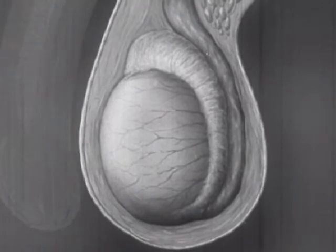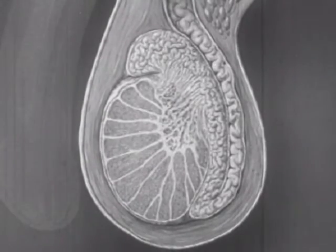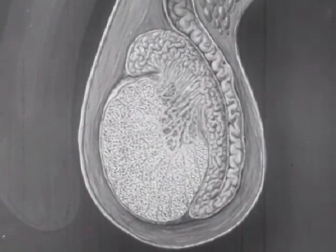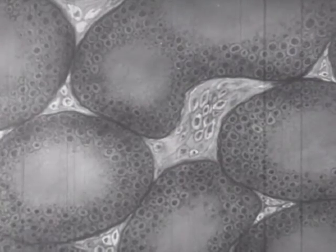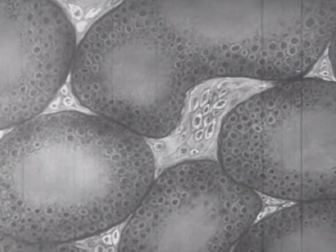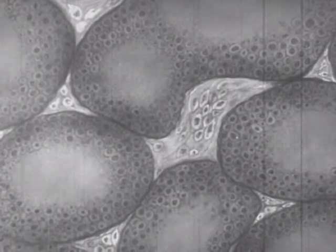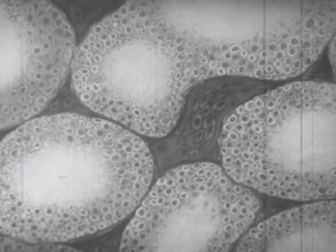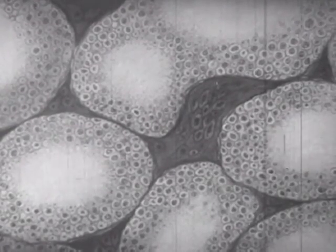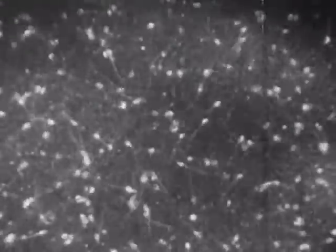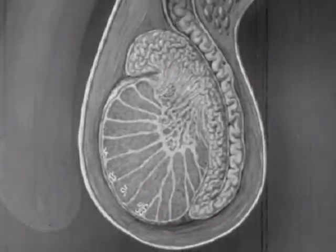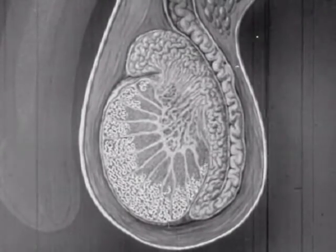If we examine a section of the testicle, we find that it is composed of small compartments filled with two kinds of cells. One kind produces an internal secretion carried in the blood, which results in the development of male characteristics such as skin, beard, voice, and body structure. The second, or lining cells, are constantly being changed into spermatozoa. Spermatozoa are the male sex cells — microscopic single cells propelled by the lashing motion of their long tails. Like the ovum, or egg, of the female, each sperm cell contains all the hereditary characteristics passed from the father to the child.